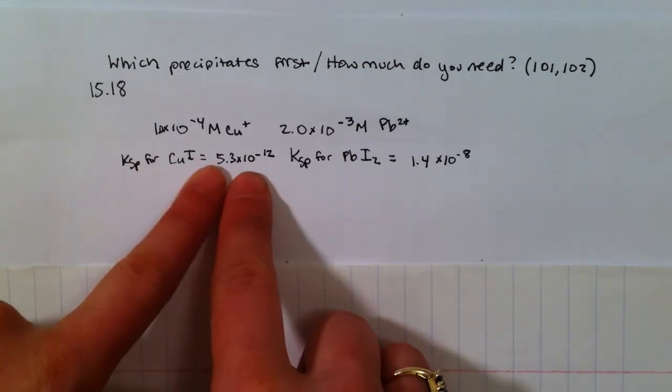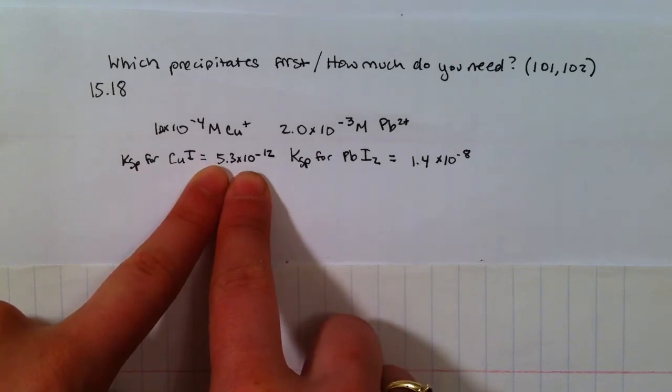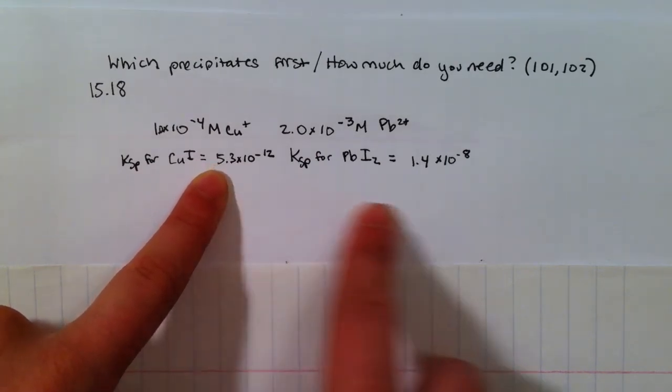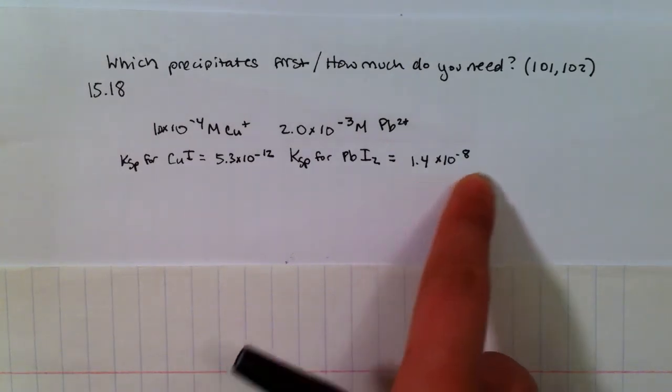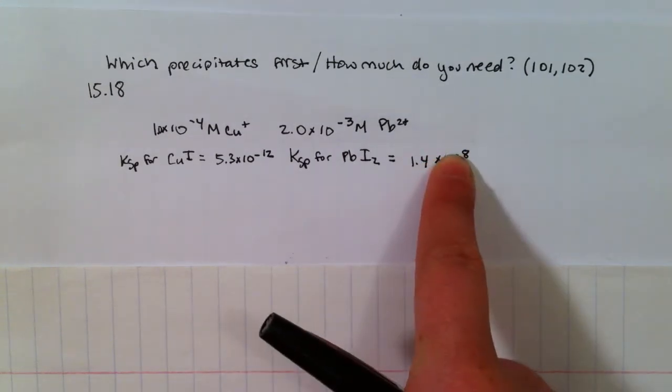When I multiply the amount that will dissolve for CuI, I get 5.3 times 10 to the negative 12. When I multiply the amount that will be able to dissolve for PbI2, I get 1.4 times 10 to the negative 8. More of it is able to dissolve here.